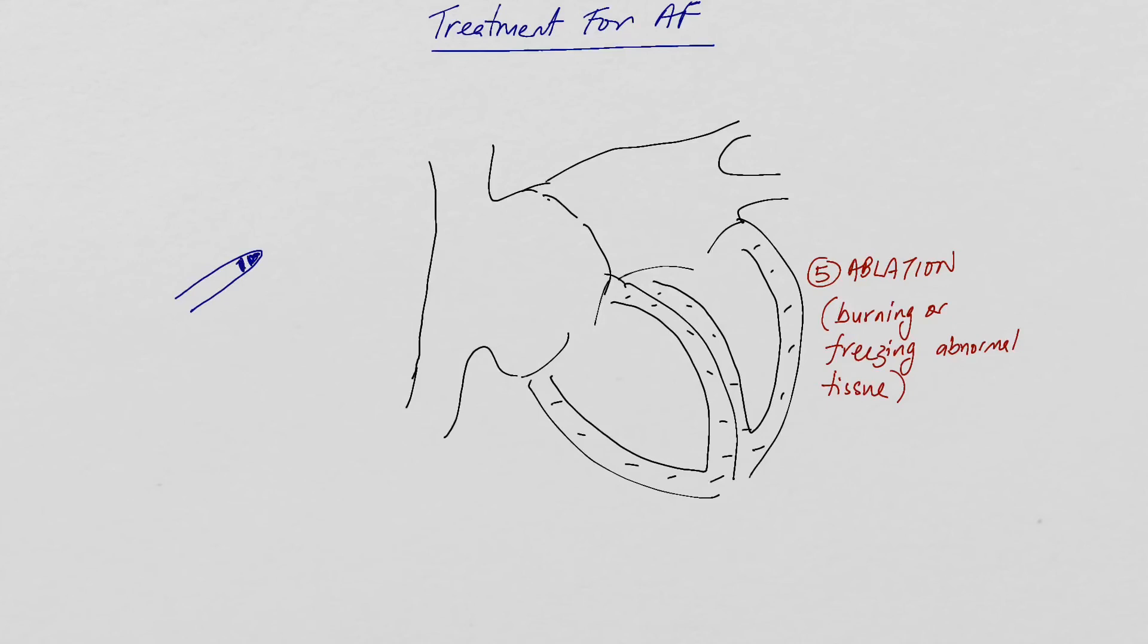In atrial fibrillation ablation, a catheter is passed through the femoral vein in your groin and this catheter is then placed into the right atrium. A small hole is created between the right and left atrium, and a transseptal puncture is performed which creates a small hole to gain access to the left atrium.